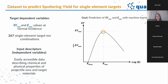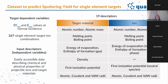For this task we collected data for 267 unique single-element target-ion combinations. As input descriptors for the ML models, we used easily accessible data describing chemical and physical properties of both ions and target materials. For both target material and ion, we used atomic number, atomic mass, melting and boiling points, energy of evaporation, enthalpy of formation, densities, first ionization potentials, and atomic, covalent, and van der Waals radii.